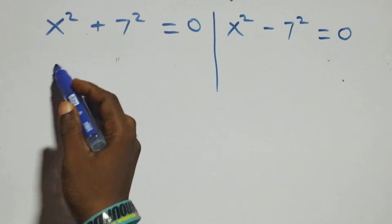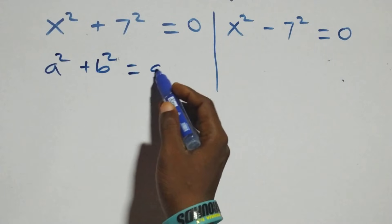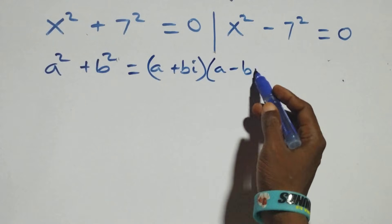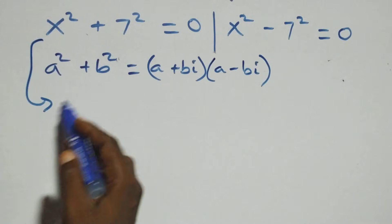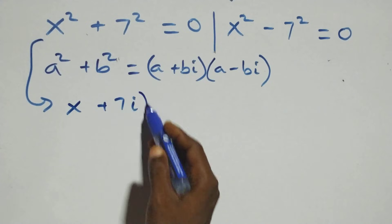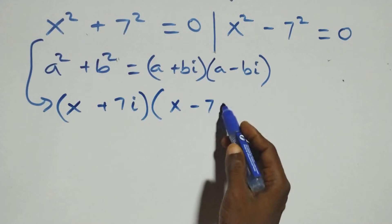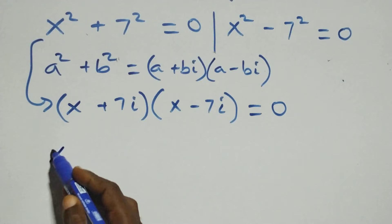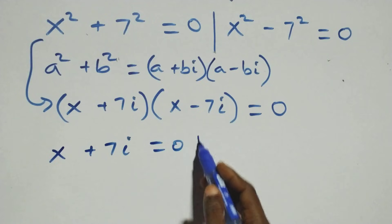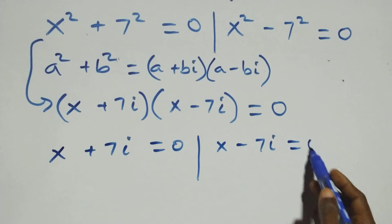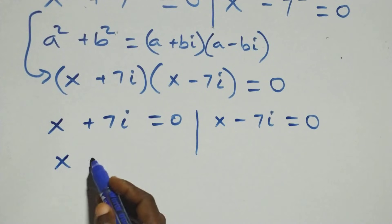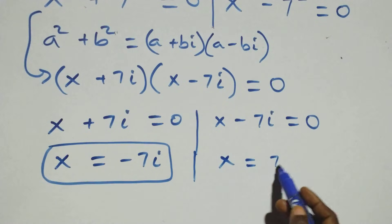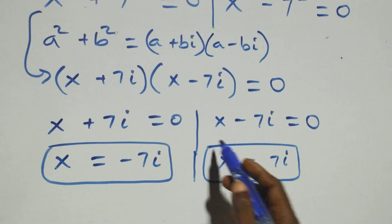Solving the first case, x squared plus 49 equals zero, we use the sum of squares factorization: a squared plus b squared equals (a plus bi)(a minus bi). So this becomes (x plus 7i)(x minus 7i) equals zero, giving two complex solutions: x equals negative 7i, and x equals 7i.